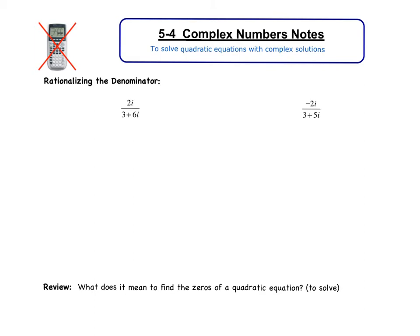On this first problem that you see, 2i divided by the quantity 3 plus 6i. In math we've decided, just as mathematicians, that i is never allowed to be in the denominator. So that 2i in the numerator is not a problem, the 6i in the denominator is though.